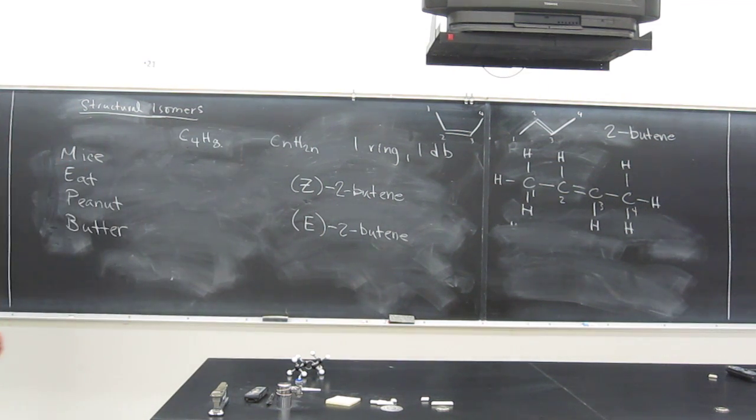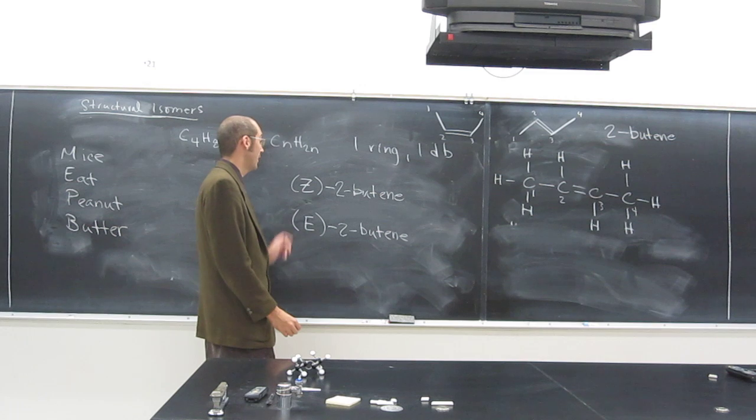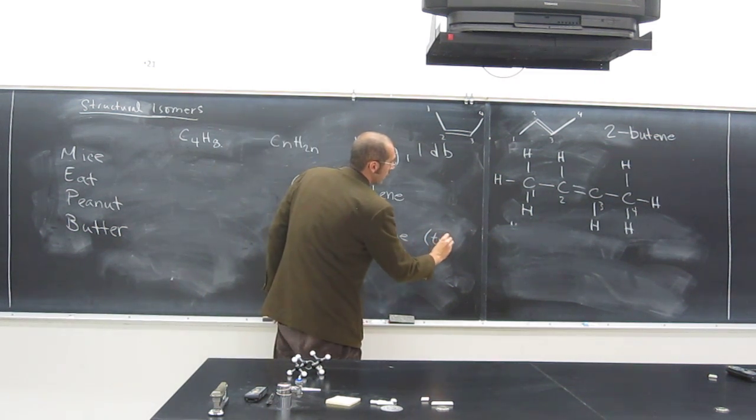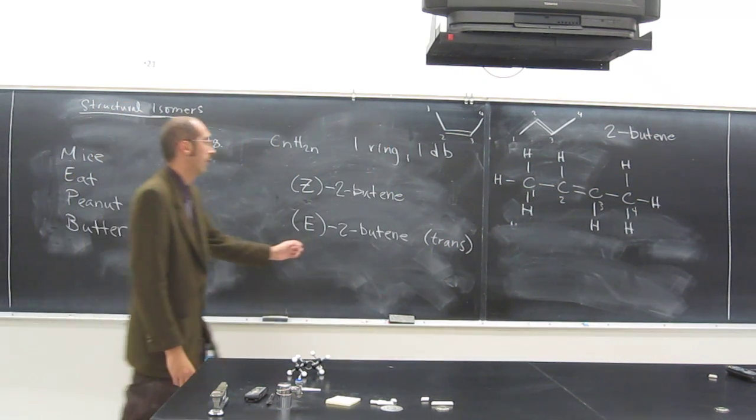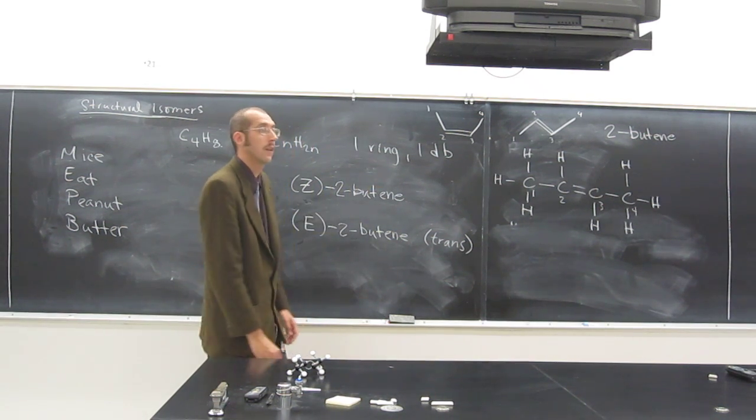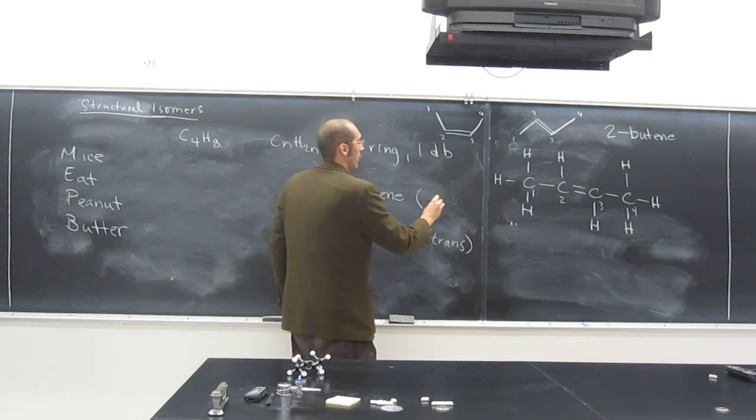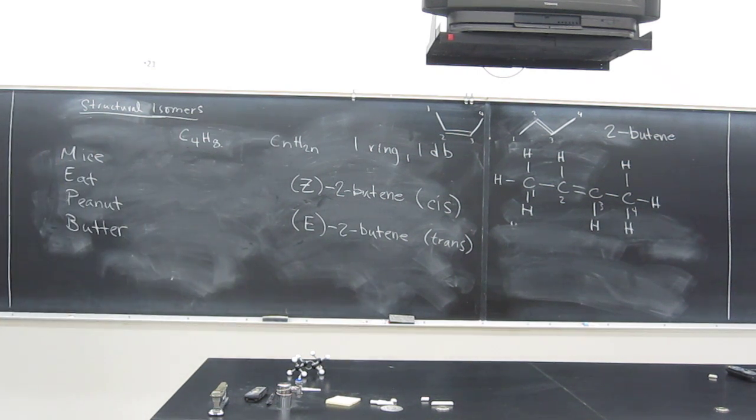Another way to call these, you might hear, is cis and trans. So, trans is not on the same side, they're opposite of each other. So, you can also hear these called trans double bonds or E double bonds if they're on opposite sides. If they're on the same side, they're going to be either Z or cis double bonds. So, those are also structural isomers of each other.